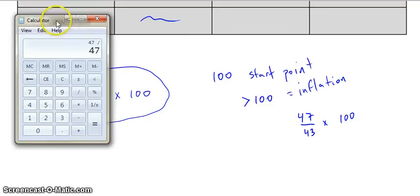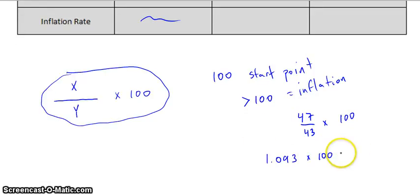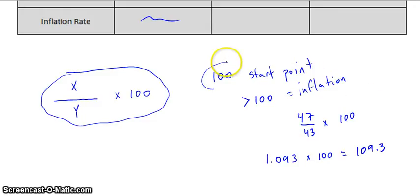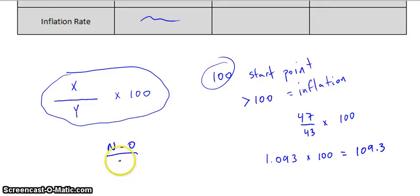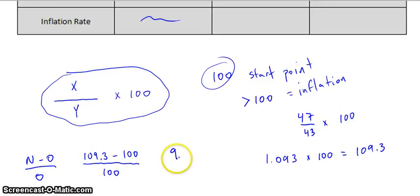This is one of those times where you can use a calculator. So 47 divided by 43 equals 1.093 — you need to keep 1.093. So we've got 1.093 times 100 equals 109.3. The rate of inflation is really easy to calculate — that's why we use 100 as a starting point. It's going to be new minus old over old. Because it's over 100, 109.3 minus 100 over 100 works out to 9.3 over 100, which equals 9.3%.